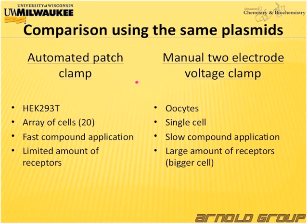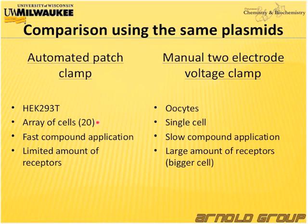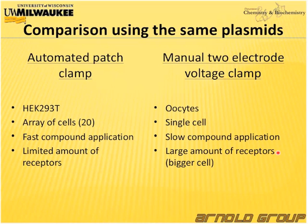In the first part of the talk, I want to show a comparison between our automated patch clamp assay and a manual two-electrode voltage clamp assay carried out in the laboratory of Professor Siegert. For the automated patch clamp, we are using HEK293 T-cells, patching 20 cells in one trapping zone, with fast compound application but a relatively limited number of receptors. In comparison, the manual assay uses oocytes as a single-cell assay with manual compound application, but with a larger number of receptors because these cells are bigger.